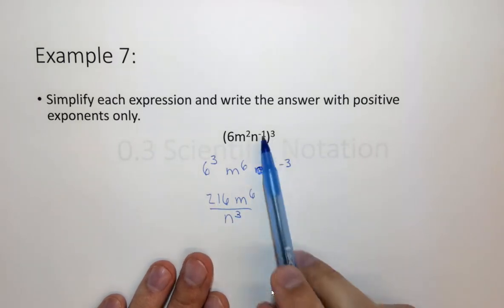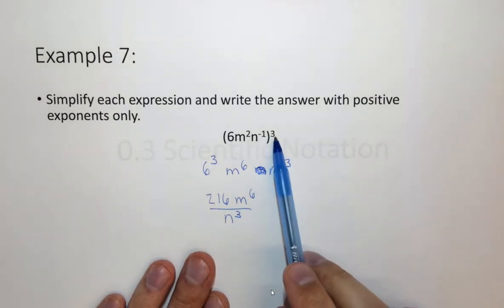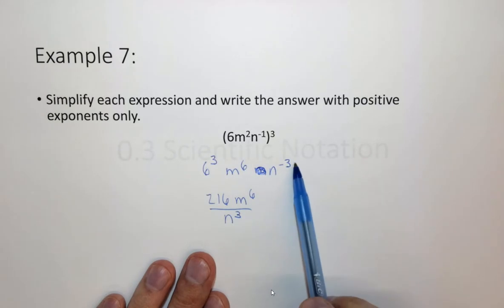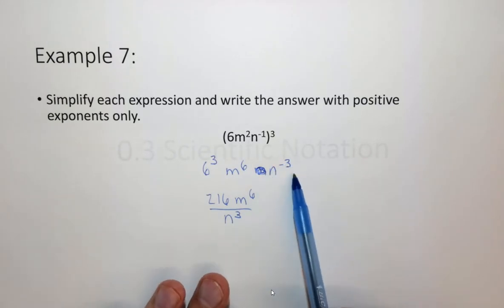So this expression simplifies this. So again we distributed the exponent through, and then because this was n to the minus 3 we did put it on the bottom. So these have been some examples where we're simplifying the expressions with exponents.